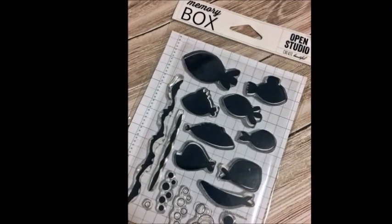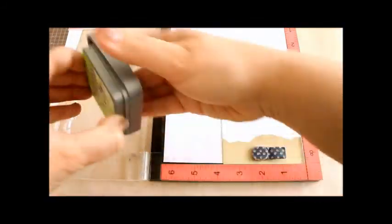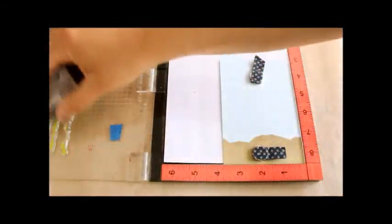Next I've set up the seaweed images from the Memory Box Fishtail Stamp Set in my MISTI and I'm stamping them with Twisted Citron ink.